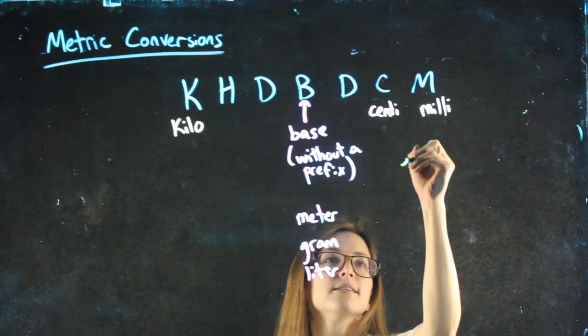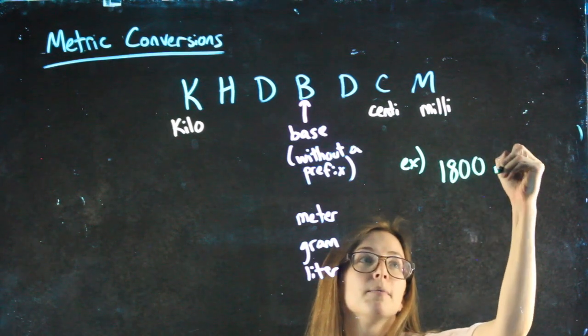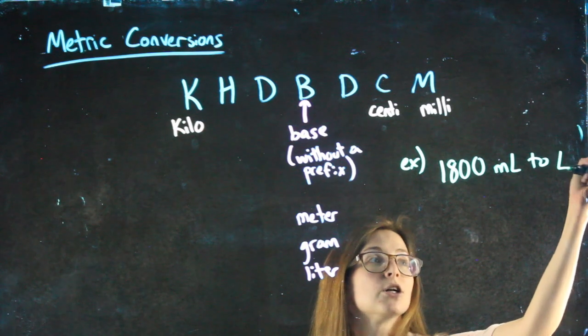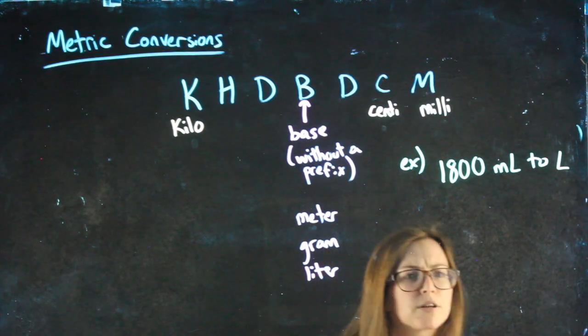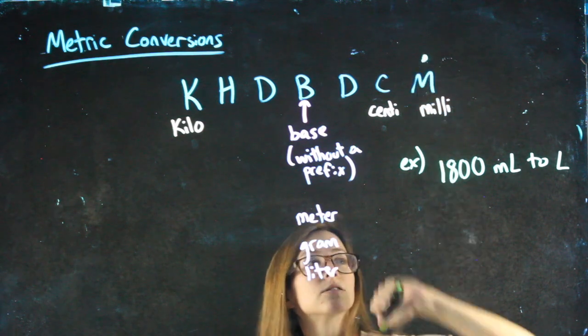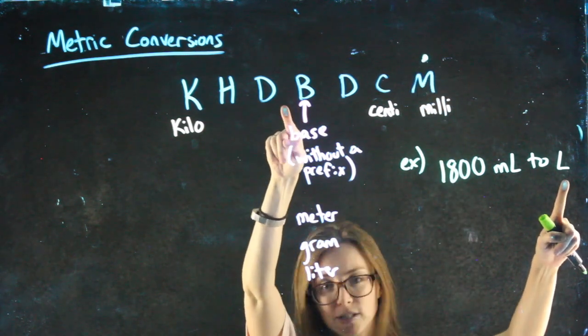So for instance, if I want to convert 1800 milliliters to liters, I'm currently at milliliters. I want to be at liters, which is the base because liters doesn't have a prefix.